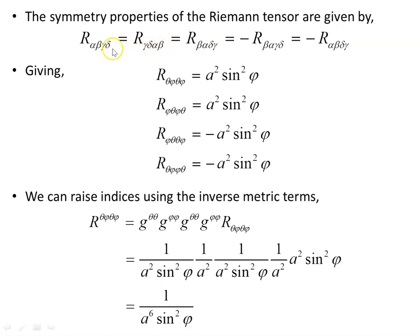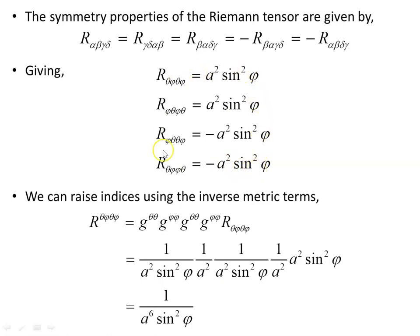The symmetry properties of the Riemann tensor are important throughout this video. We can swap the first pair and the second pair of indices — R_αβγδ = R_γδαβ — and that remains positive. We can also swap indices within each pair — R_αβγδ = R_βαδγ — giving further positive components. The negative components come from swapping indices within only one pair but not the other: R_αβγδ = −R_βαγδ = −R_αβδγ. For the 2-sphere, starting from the single independent component, the symmetry properties generate three additional components, giving four non-zero components of the Riemann tensor.